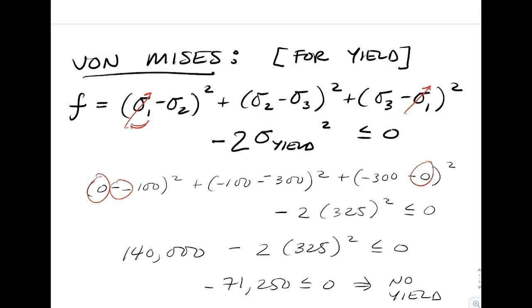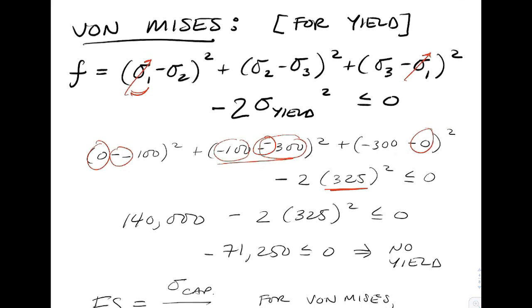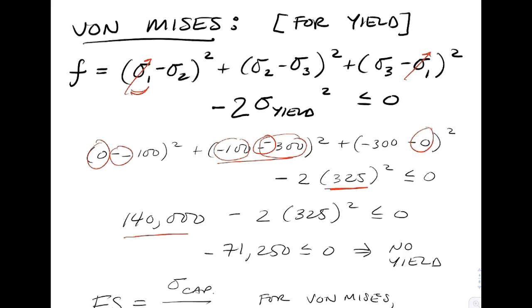Plugging in for sigma 2, keeping track of your double negatives. Again, a double negative becomes more important there, with a negative 100 plus 300. Then you have twice the yield stress squared. Multiplying that out, we find that number exceeds 140,000.